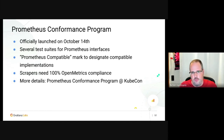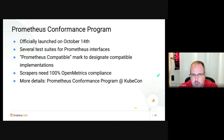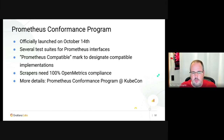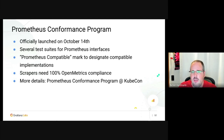OpenMetrics is part of the Prometheus conformance program, which officially launched on October 14th. We have several test suites testing for Prometheus interfaces, and any vendor, project, or product wanting an official 'Prometheus compatible' mark needs to be compliant with all relevant defined interfaces. If you're scraping data, you need to be 100% OpenMetrics compliant to receive the Prometheus compatible mark.